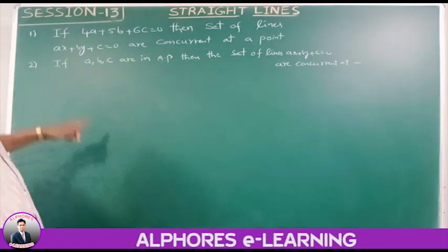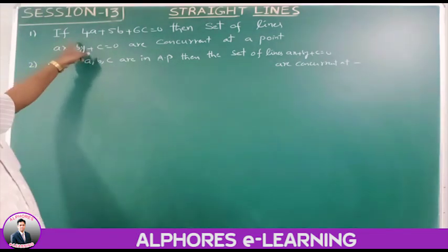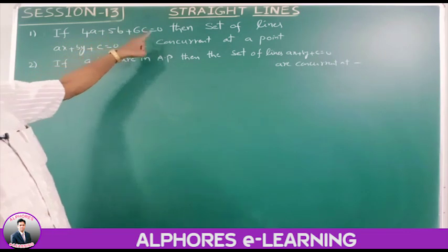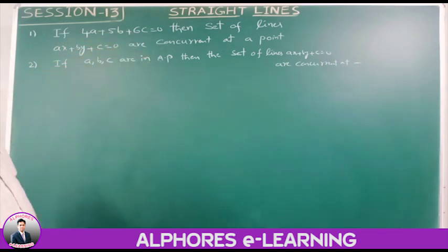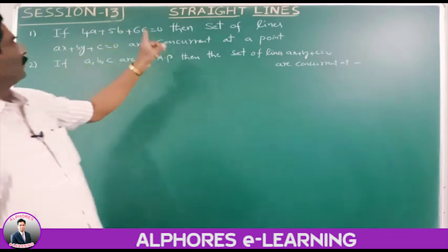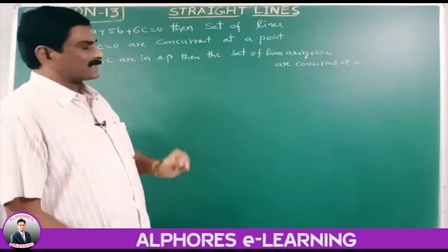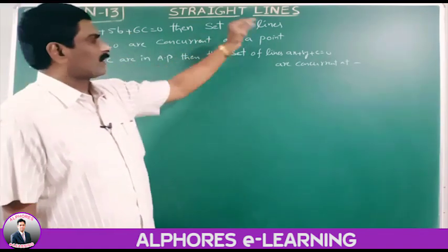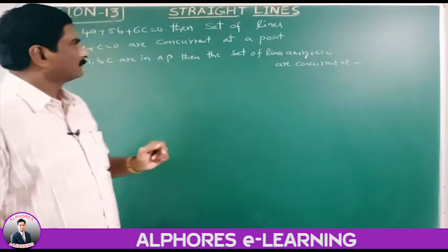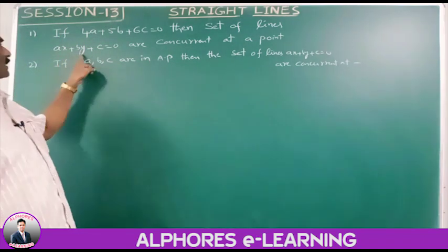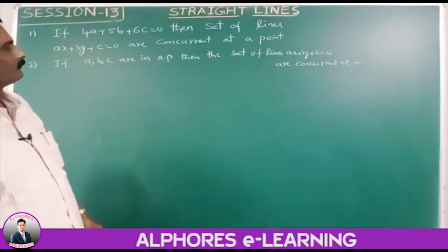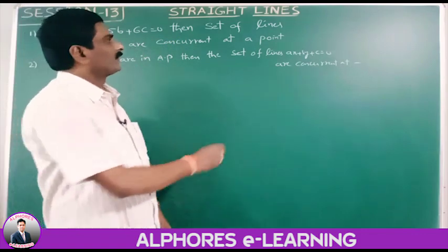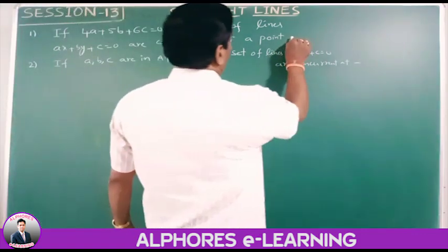First problem: if 4a plus 5b plus 6c is equal to 0, then the set of lines ax plus by plus c equals 0 are concurrent at a point — find that point.